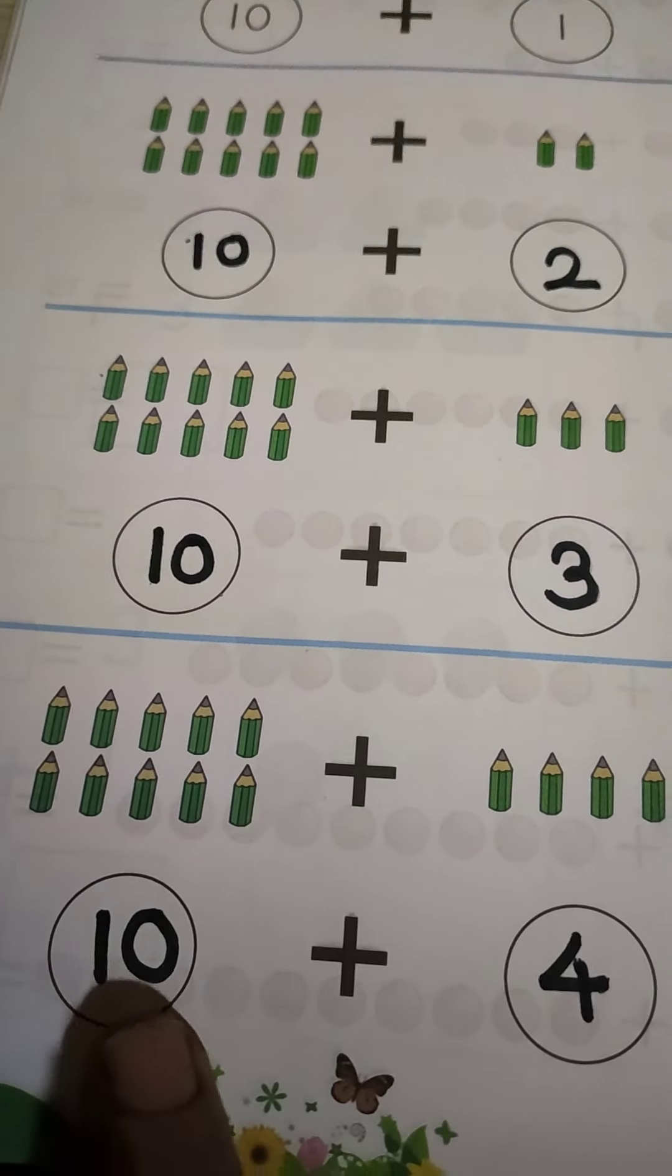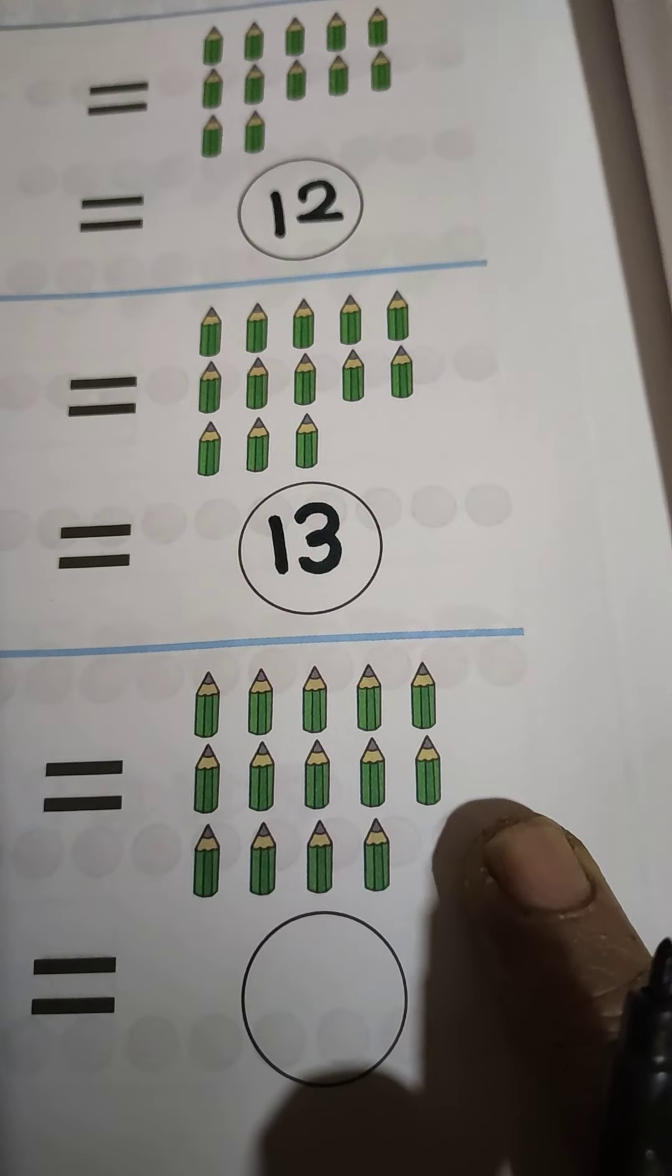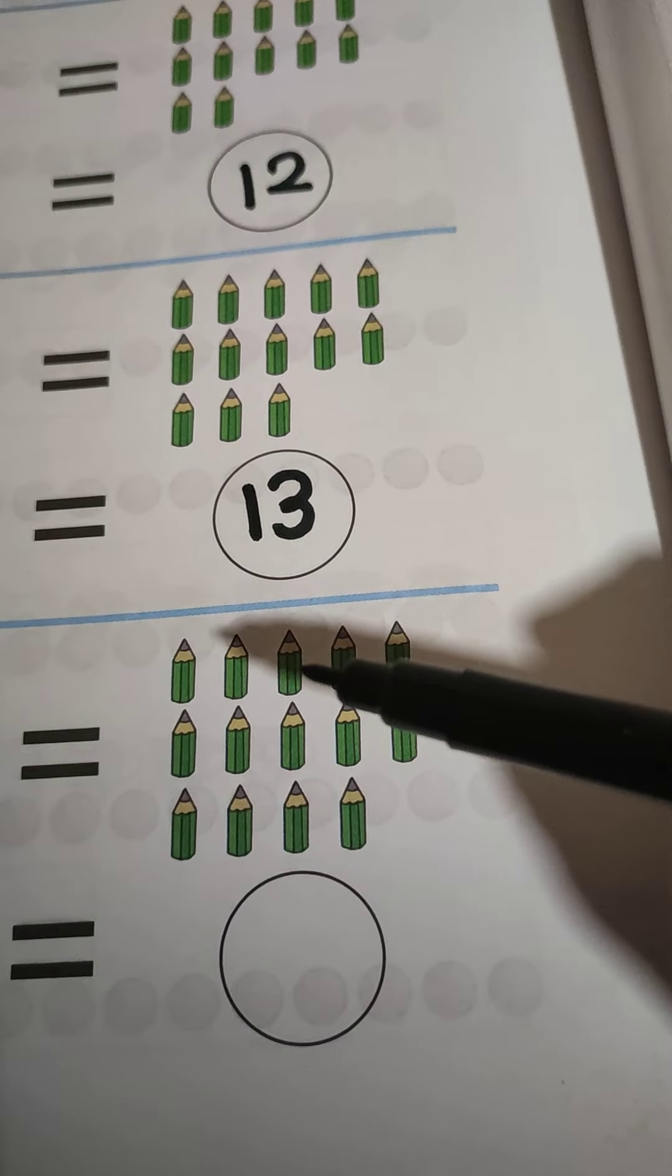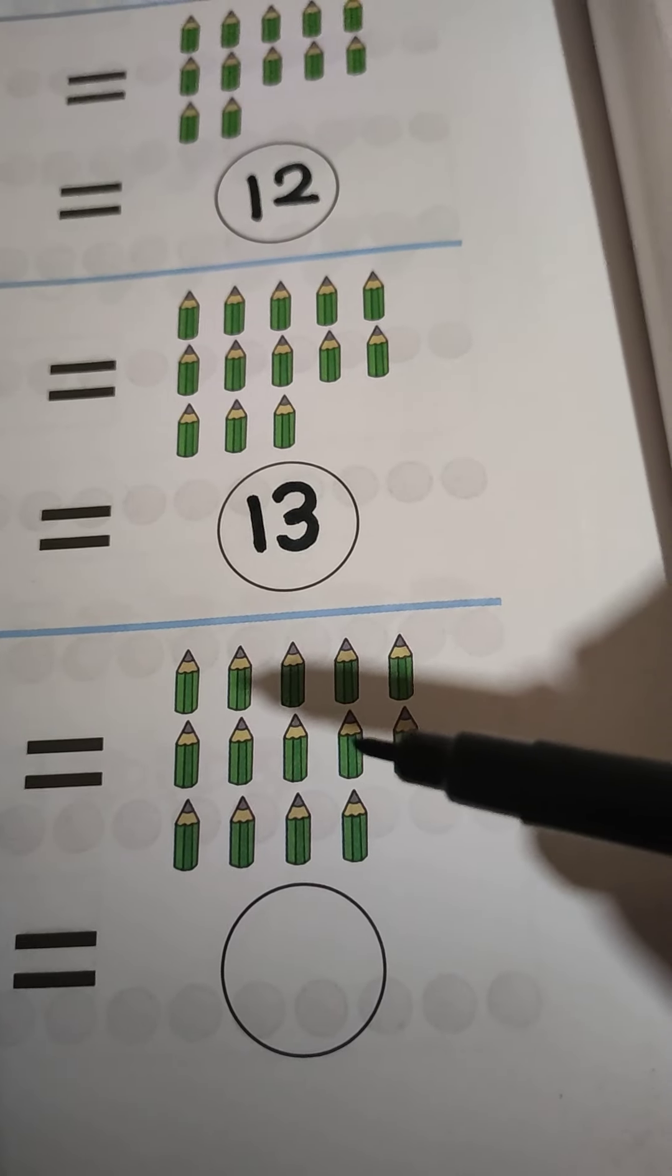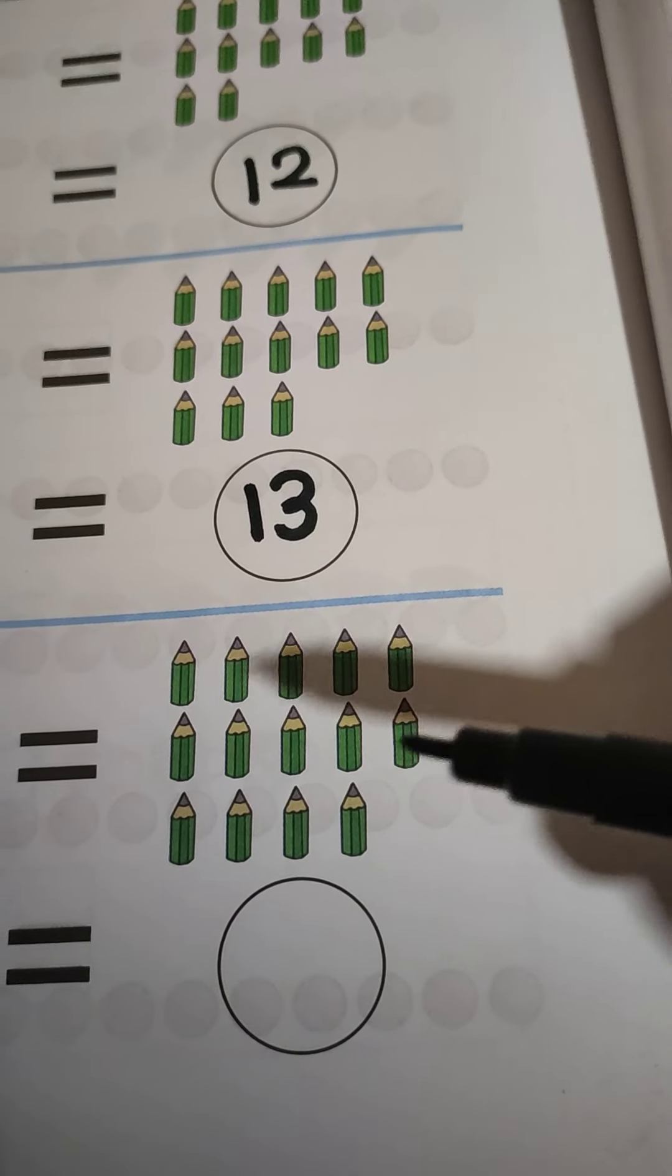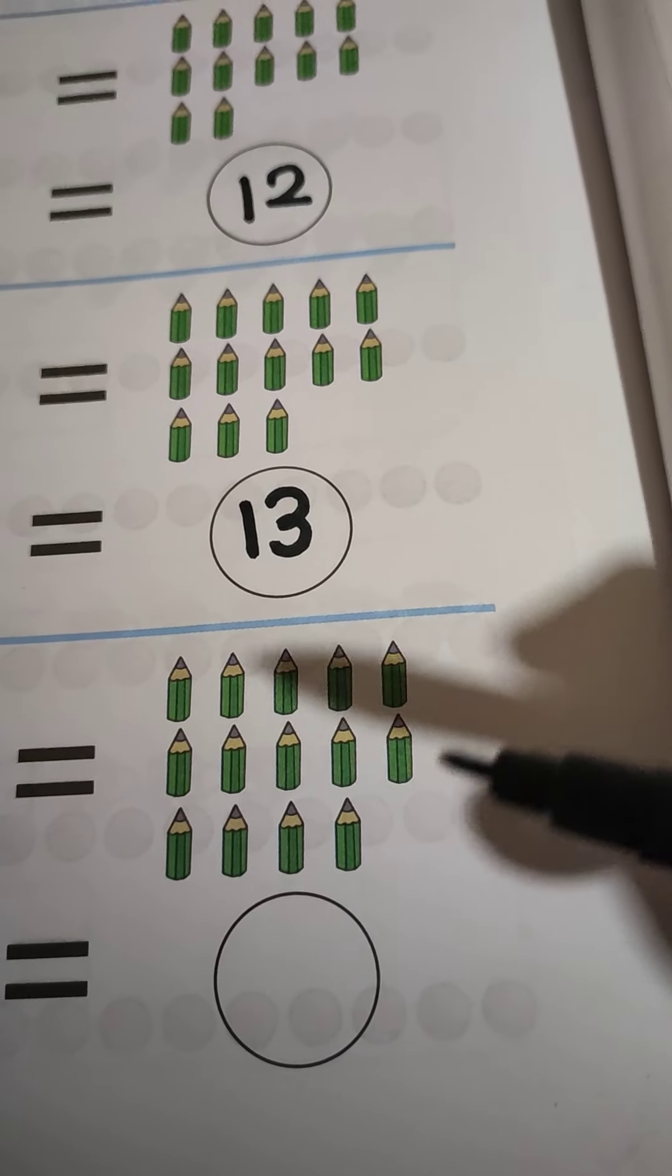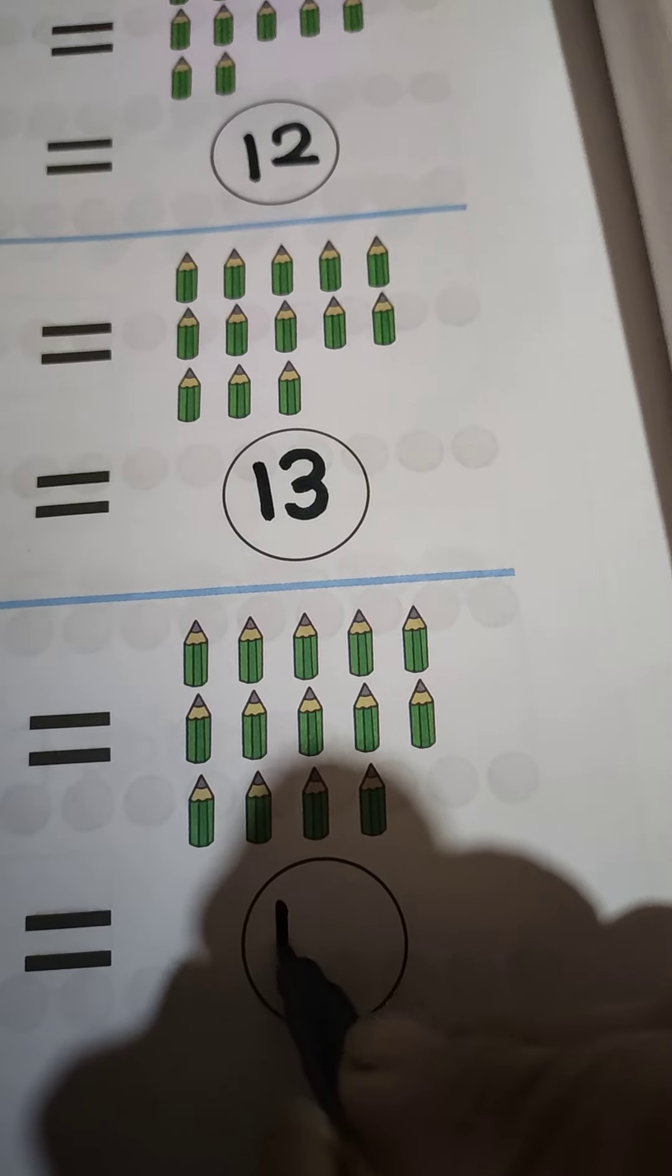10 plus 4 all together. Come on, count. 1, 2, 3, 4, 5, 6, 7, 8, 9, 10, 11, 12, 13, 14. So total how many pencils? 14.